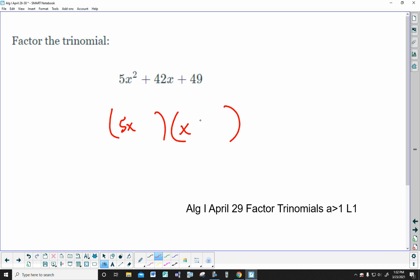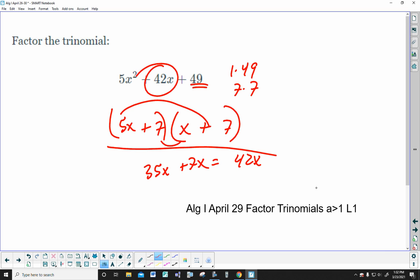5x, x, 49. Not going to be 1 in 49. How about 7 and 7? 7 and 7. Multiplying to positive, so they're both positive. Adding to positive. So, outside, 35x. Inside, 7x. That's 42x. As needed. So, there's your answers.